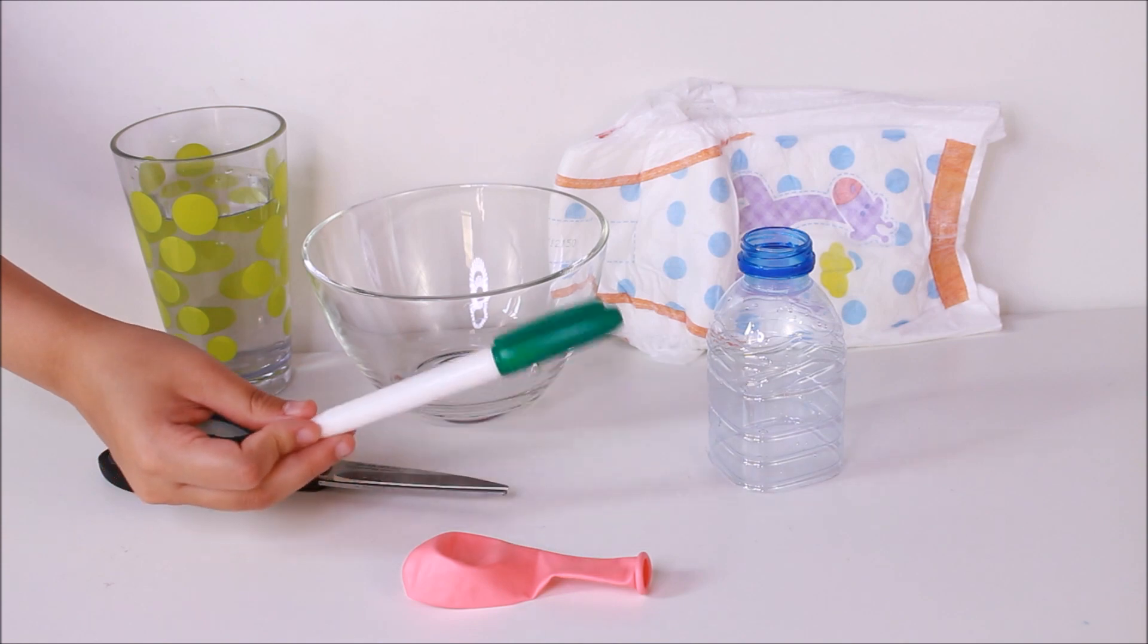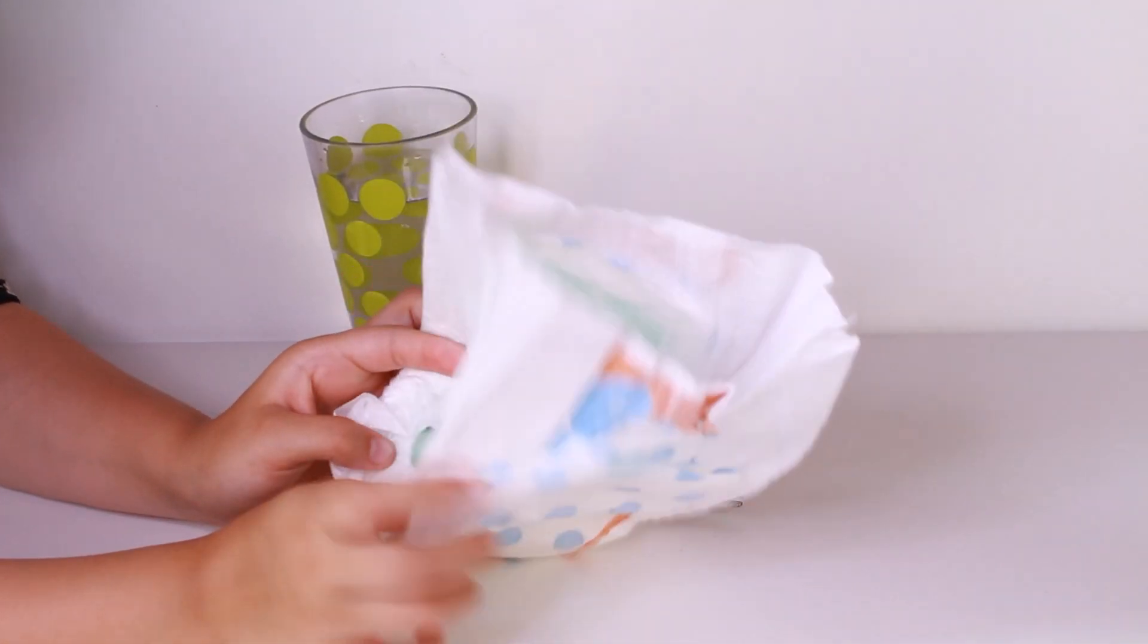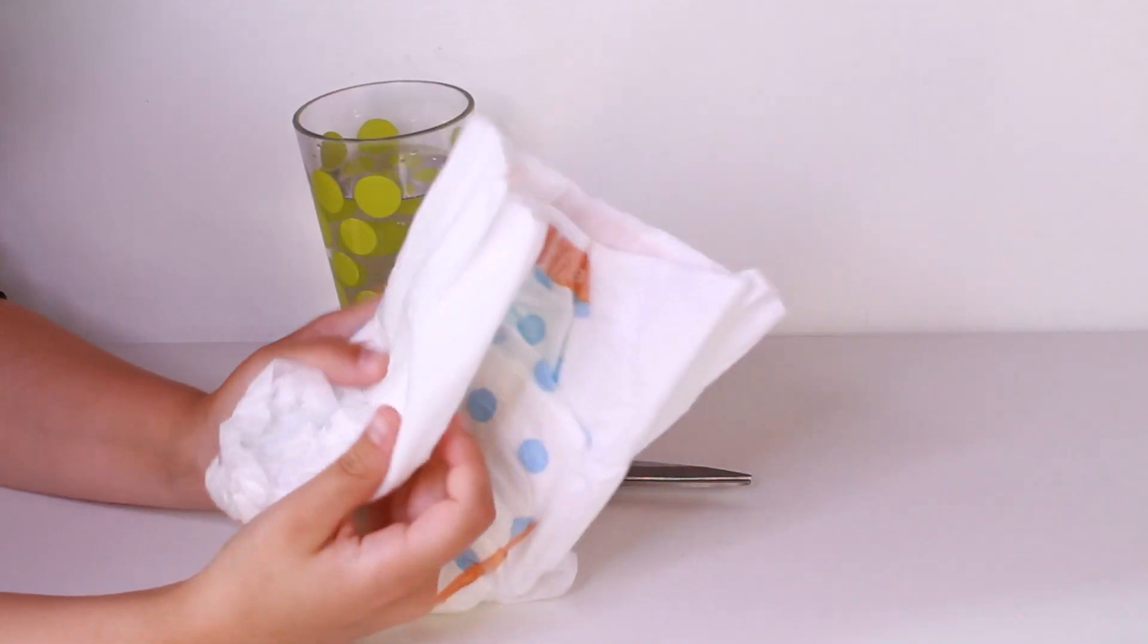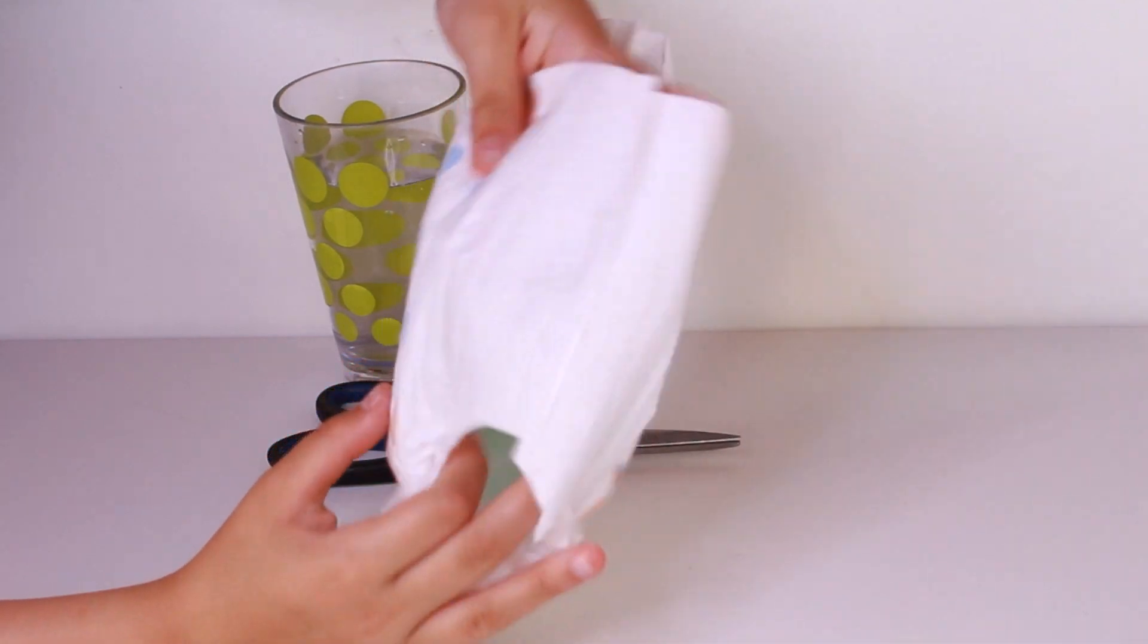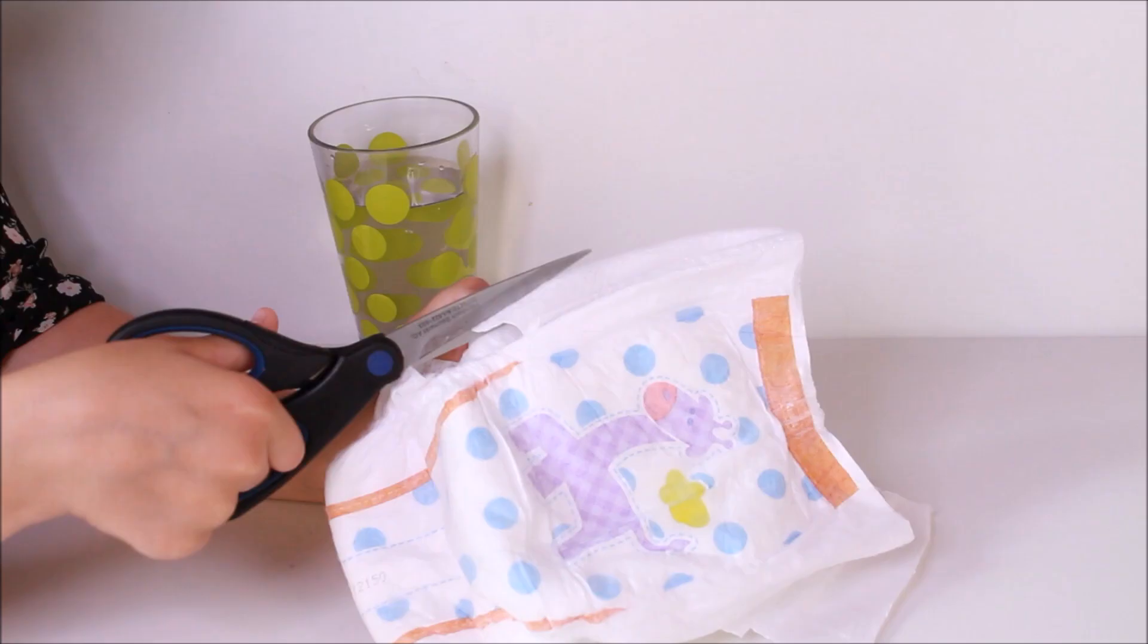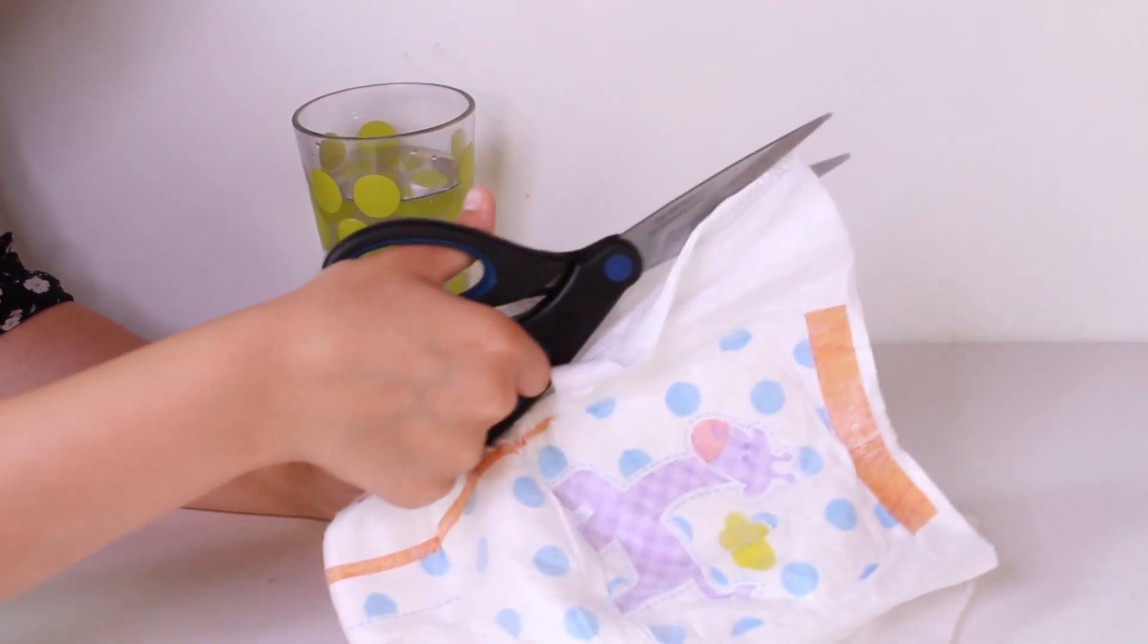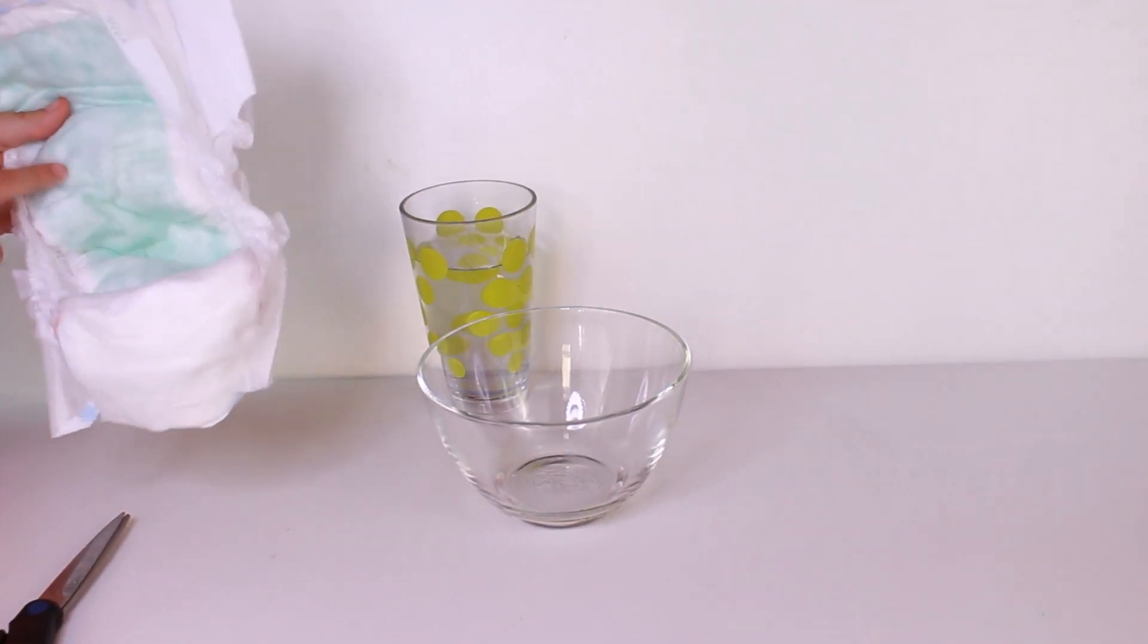The first thing you're going to do is cut your diaper. This is not exactly like a regular diaper because this one is like an underpants shaped diaper. I'm going to cut everything but not the green part because that's where the jelly is.